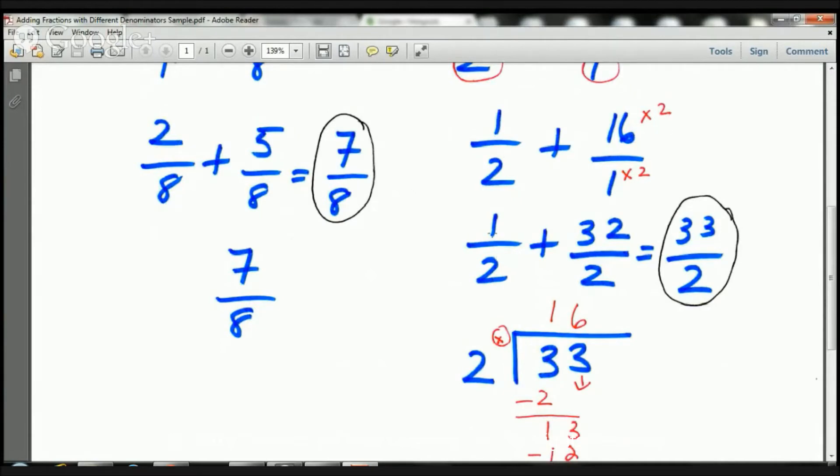I'm going to bring down the 1/2 here. 16 times 2 is 32. 1 times 2 is 2. Look, I've got the same denominator now. Now, I'm happy. So, now I just add straight across. 1 plus 32 equals 33 over 2.